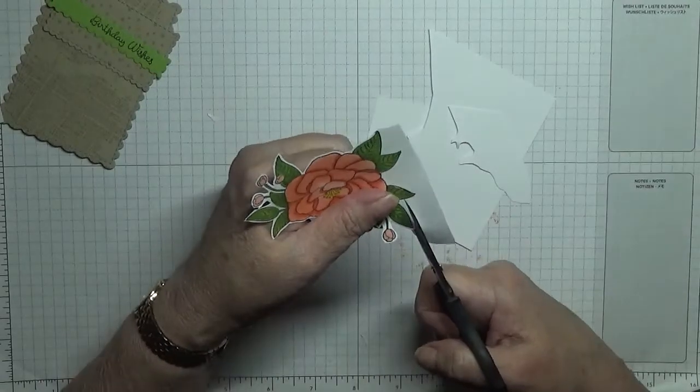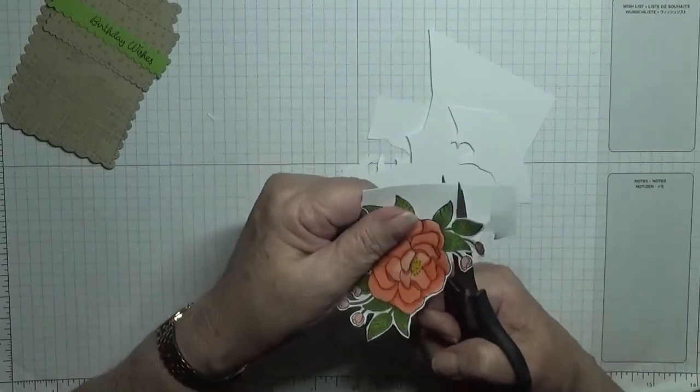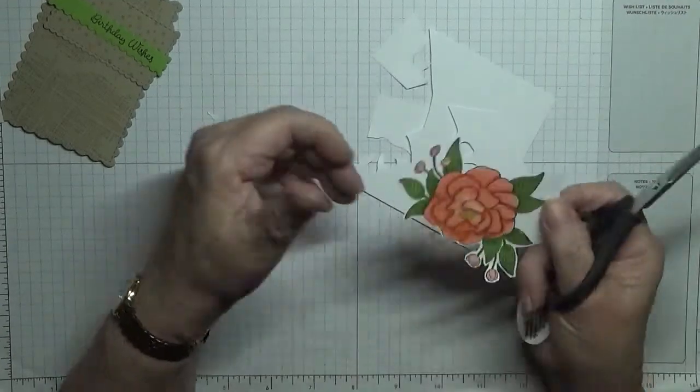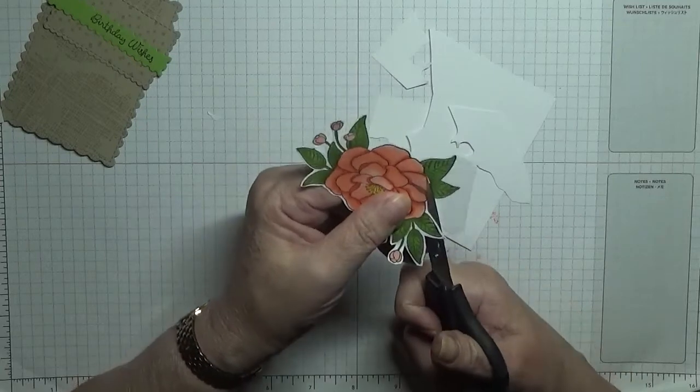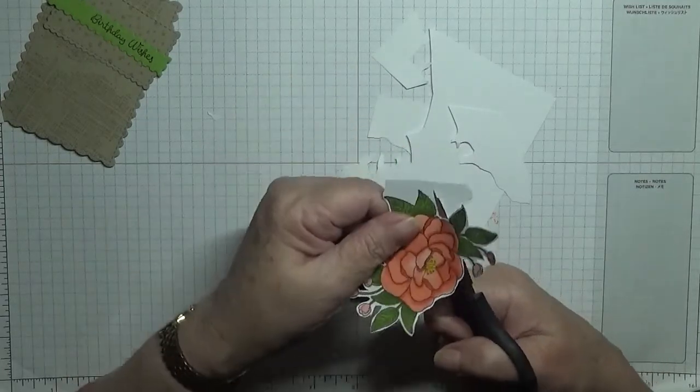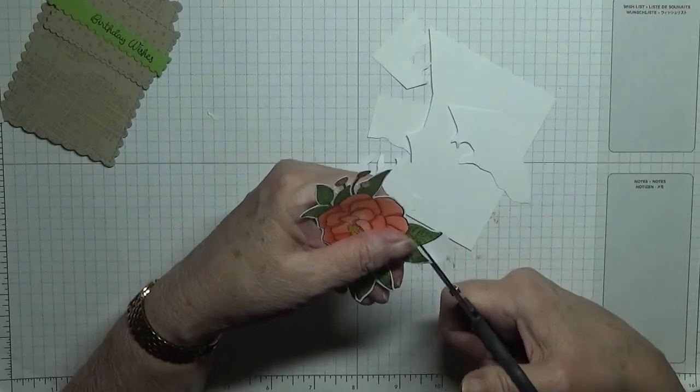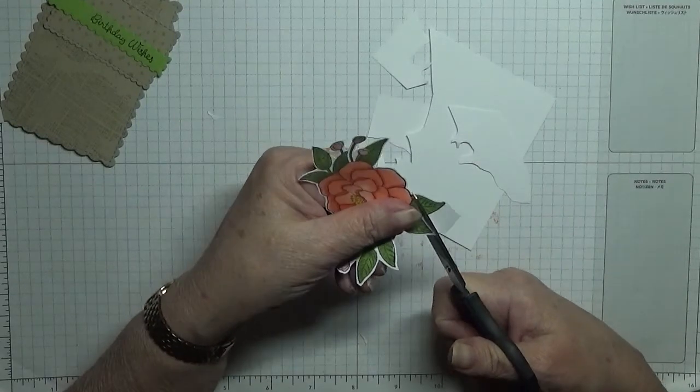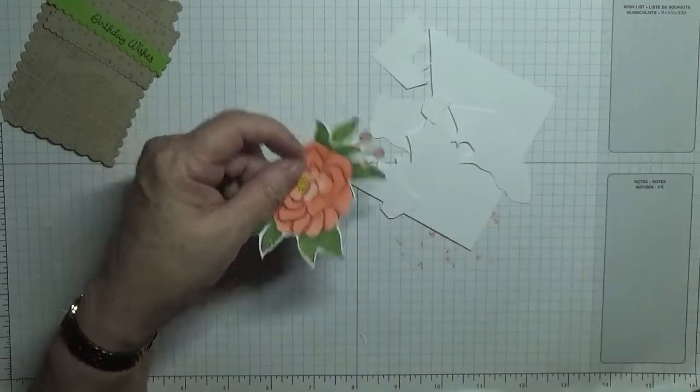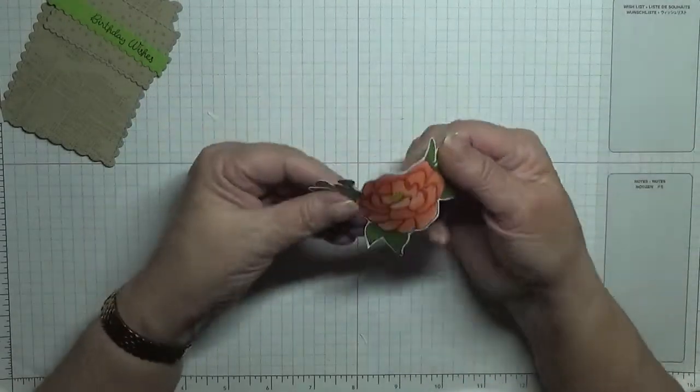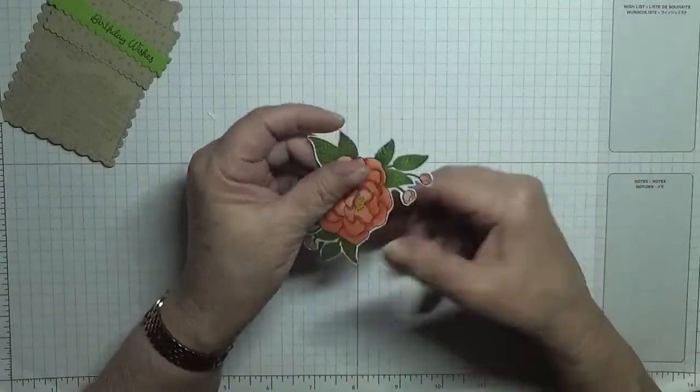It's harder to cut this out on camera. When you're just cutting it out for the sake of cutting it out, I seem to whiz around it. There we are, one flower cut out.